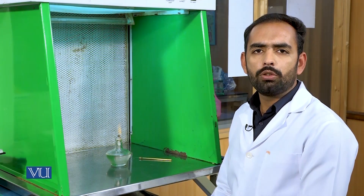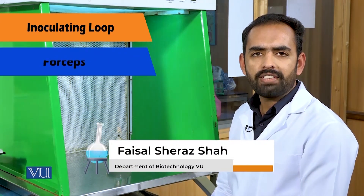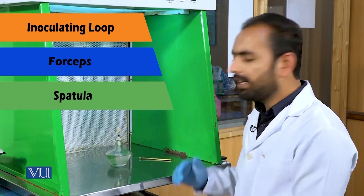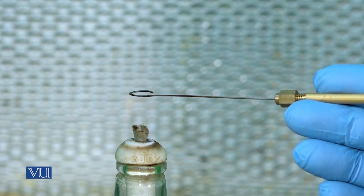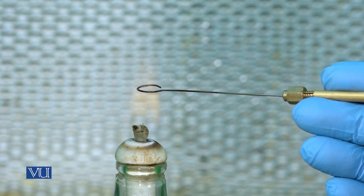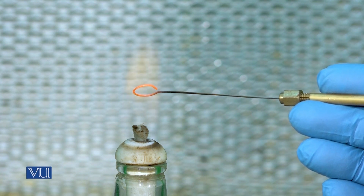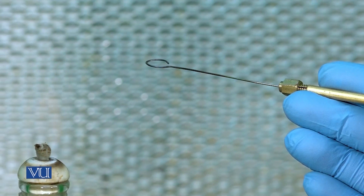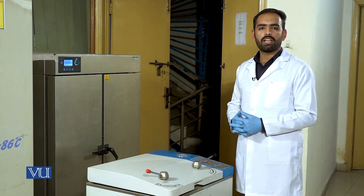The other method of physical sterilization using dry heat is flaming. Flaming involves destruction of microbes by burning. Flaming is used to sterilize inoculating loops, forceps, and spatulas. In flaming, take an article in the flame; when the article turns red, sterilization is done.